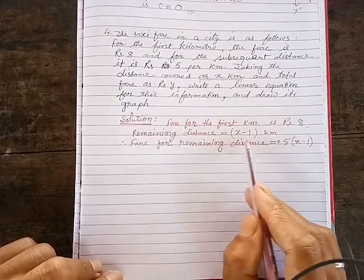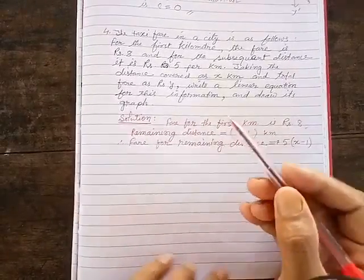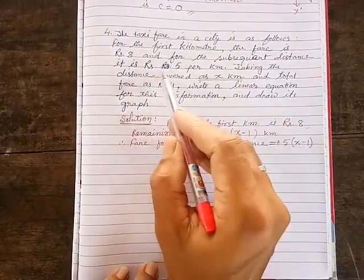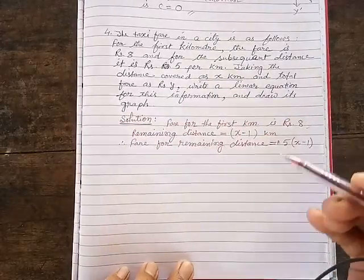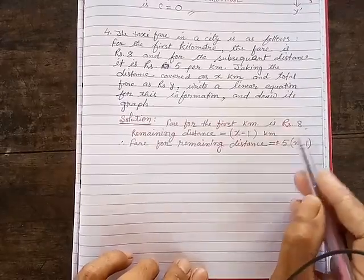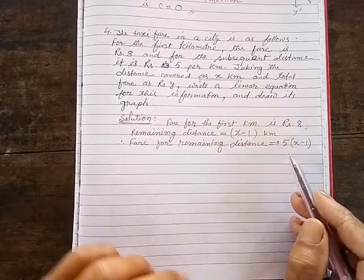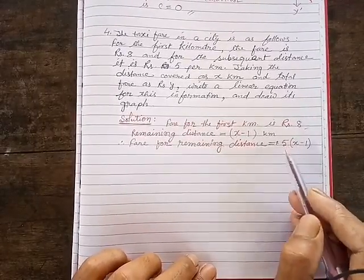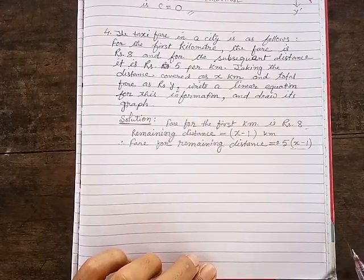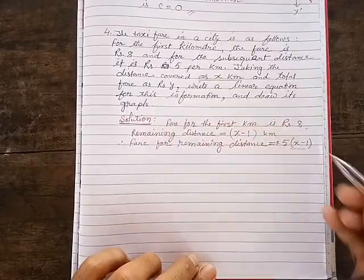For the subsequent distance, the fare is rupees 5 per kilometer. So after paying for the first kilometer, for the remaining (x − 1) kilometers you pay rupees 5 per kilometer. Therefore, the fare for the remaining distance is 5 × (x − 1).